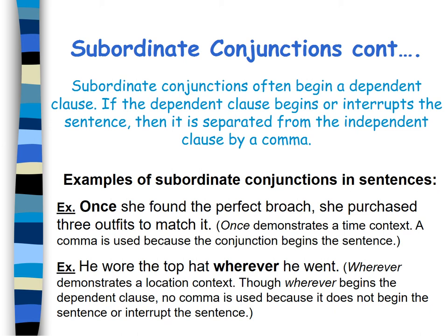Subordinate conjunctions often begin a dependent clause. If the dependent clause begins or interrupts the sentence, then it is separated from the independent clause by a comma. For example: Once she found the perfect brooch, she purchased three outfits to match it. 'Once' demonstrates a time context. A comma is used because the conjunction begins the sentence, which turns this into a dependent clause. If you say 'once she found the perfect brooch' and stop, it would never make a complete idea. So if you start your sentence using a dependent clause, please make sure you set the two clauses off using a comma.